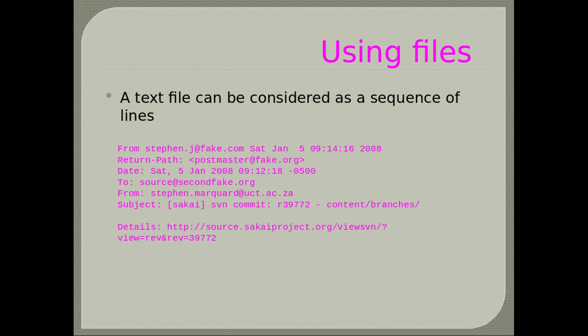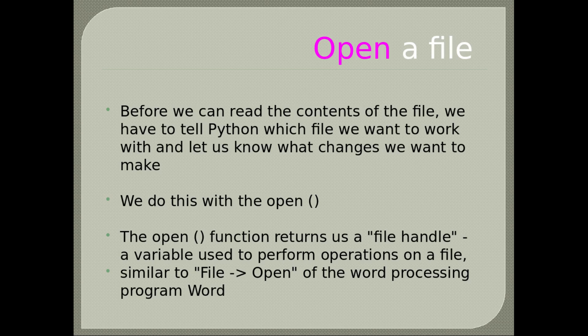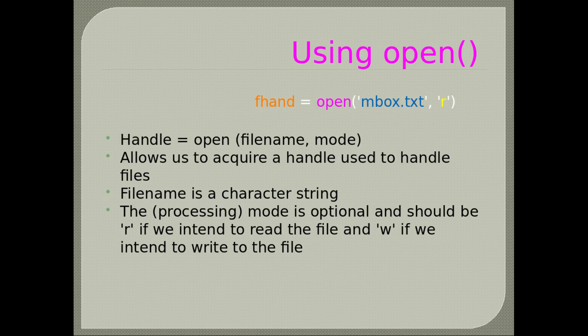Reading files: a text file can be considered as a sequence of lines. Before reading the contents of a file, we have to tell Python which file we want to work with and what changes we want to make — we do this with the open() command. The open function returns a file handle, a variable used to perform operations on a file. handle = open(file_name, mode) — mode is optional and should be 'r' to read and 'w' to write.